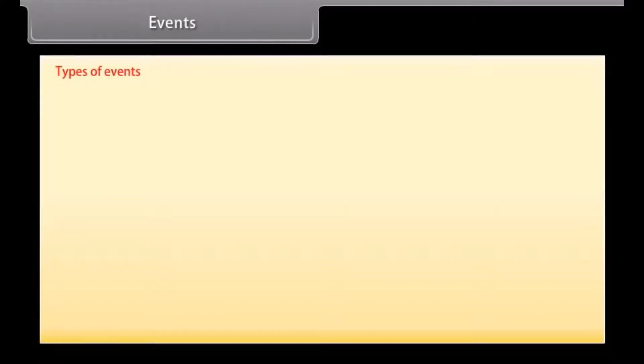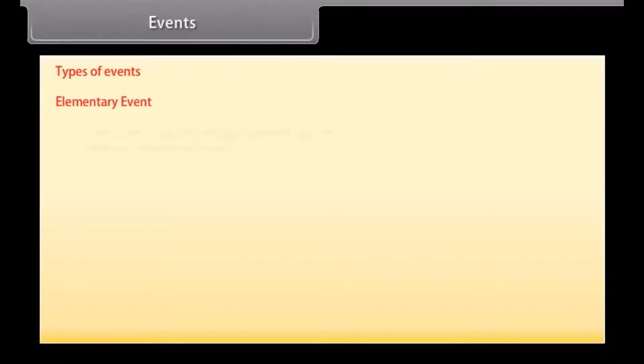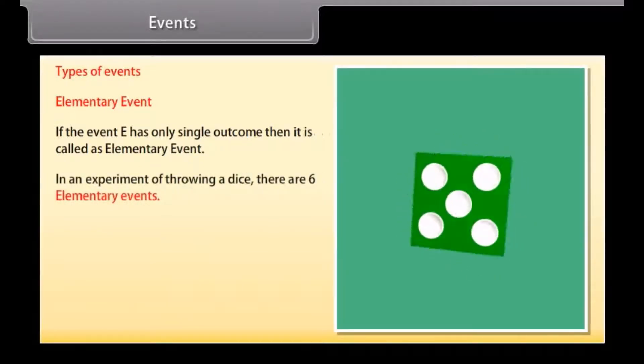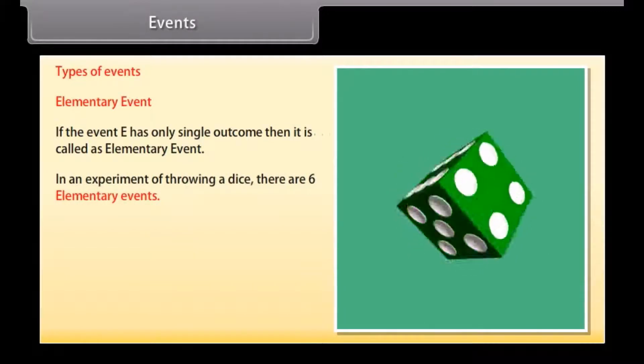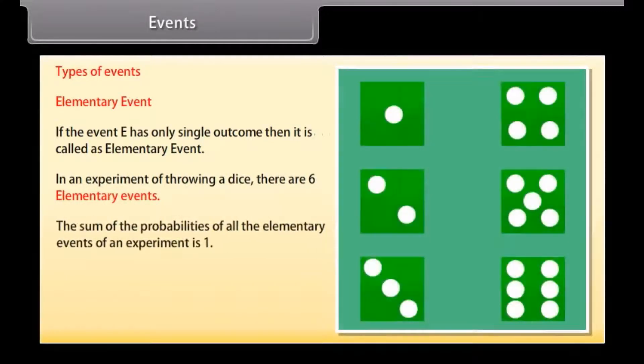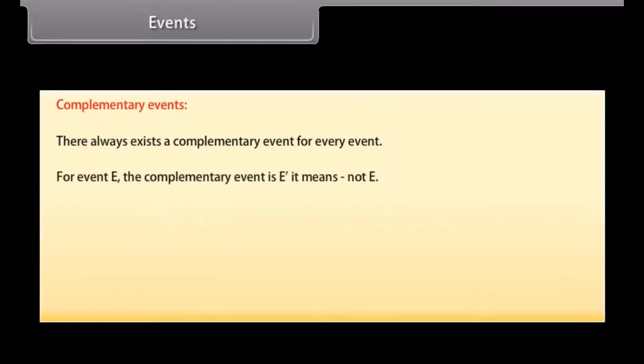Types of events. Elementary event: if the event E has only a single outcome, then it is called an elementary event. In an experiment of throwing a dice, there are 6 elementary events. The sum of the probabilities of all the elementary events of an experiment is 1.